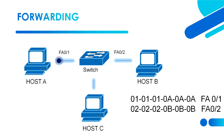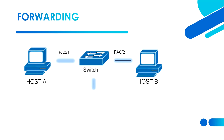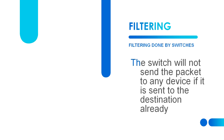There is a packet from Host A that wants to reach Host B. When the switch receives the packet, it sees that the source MAC address is from FastEthernet 0/1 and the destination MAC address is FastEthernet 0/2, so it will send the packet correctly to the destination. This is how switches forward packets correctly.